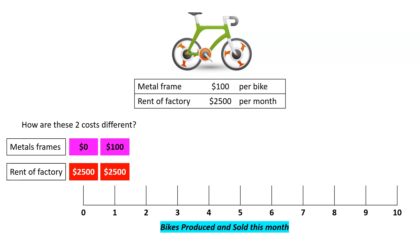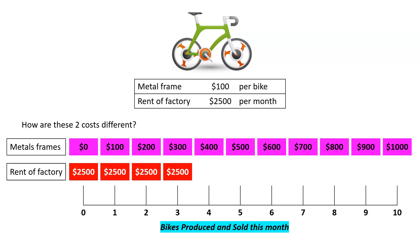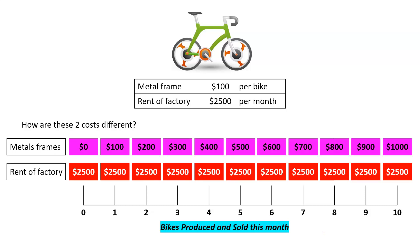The rent is fixed — it's not going to change, it's constant. If we make two bikes, the metal frame cost will be $200 ($100 for two bikes), but the rent will stay the same, and so on for the rest of the month. So we can see the variable cost here is the metal frame — it's going to go up based on how many units we produce and sell — but the rent of the factory won't change. We can make zero units or a million units; it's going to be $2,500 for the whole month regardless.